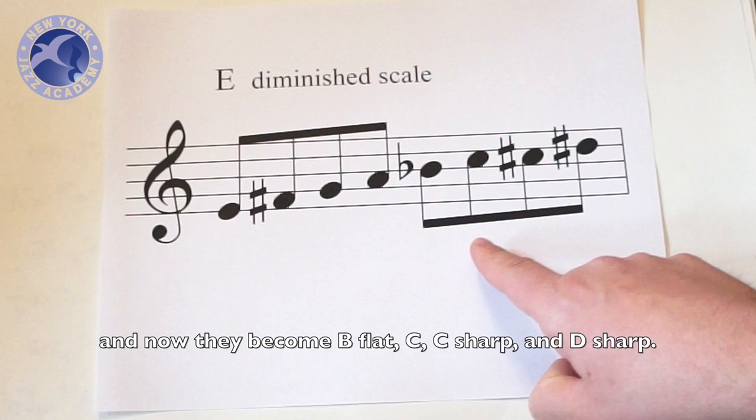And now they become B flat, C, C sharp, and D sharp. And again, there you have the E diminished scale.